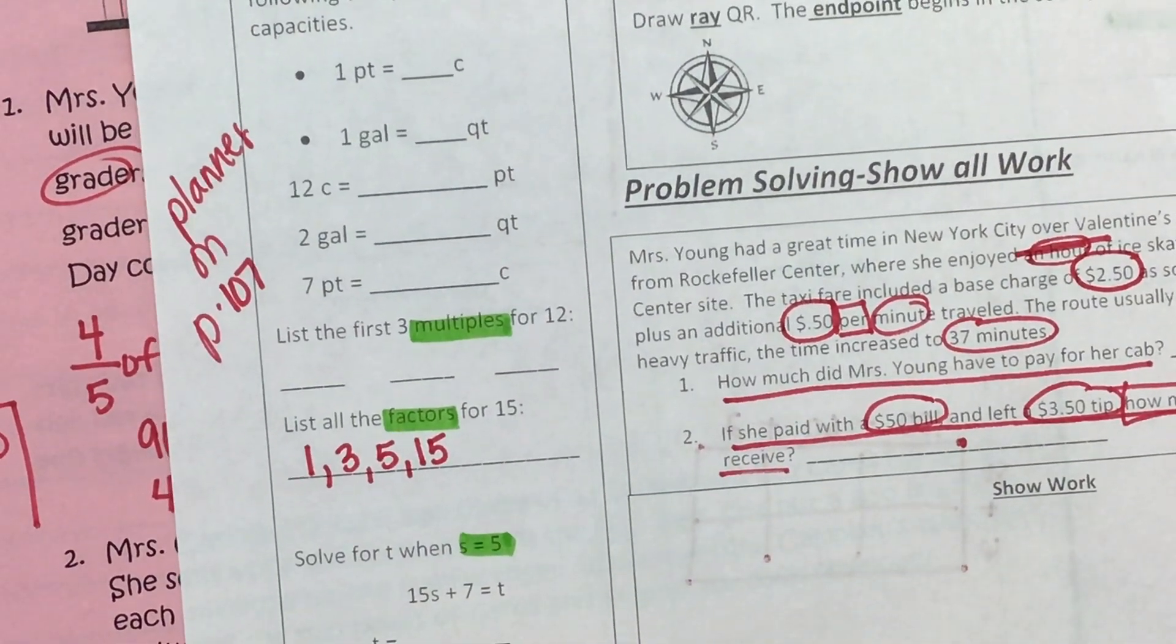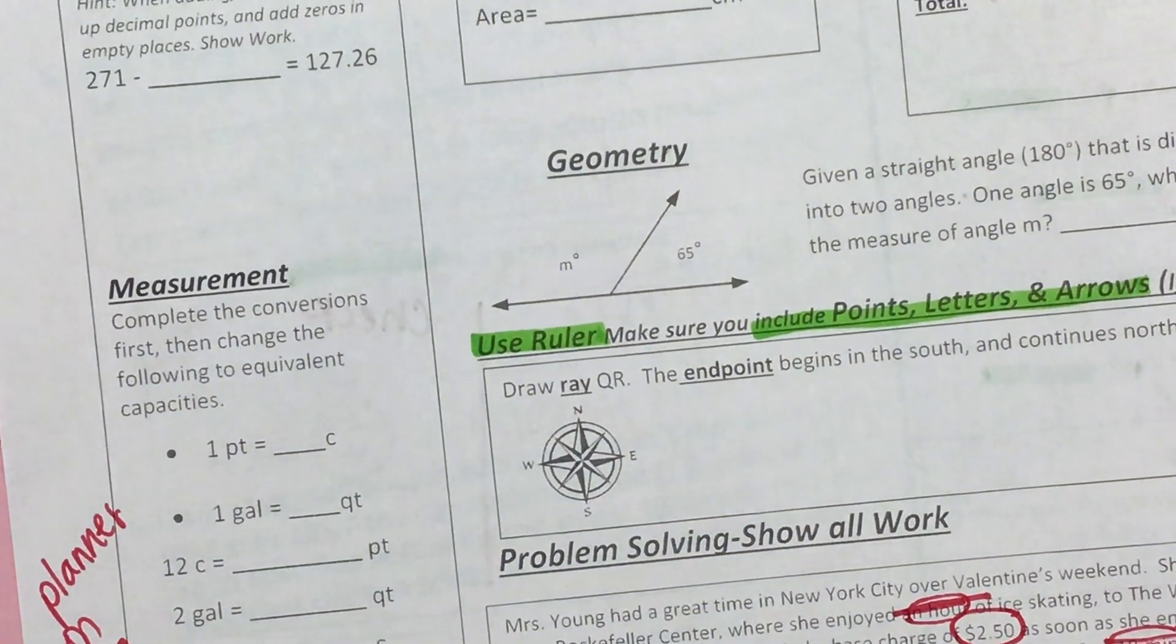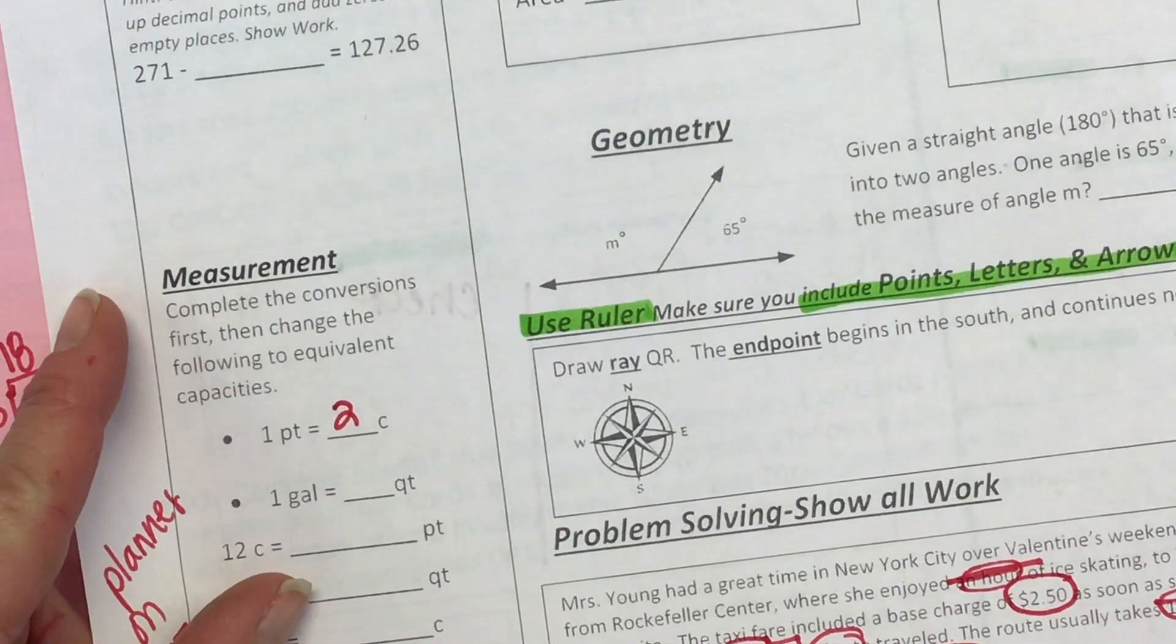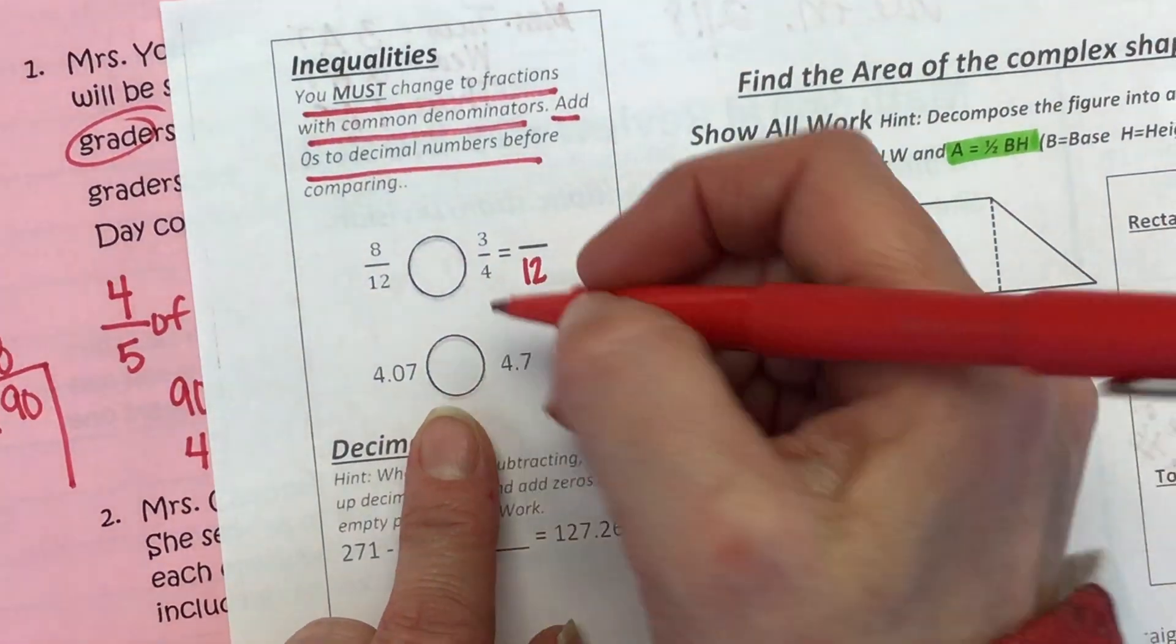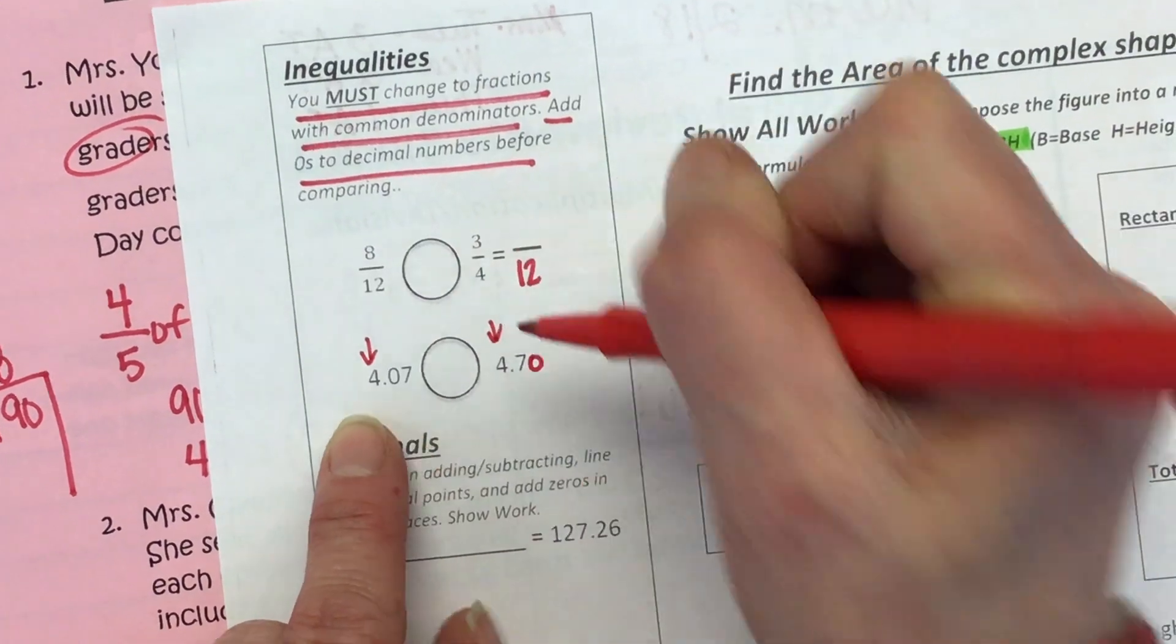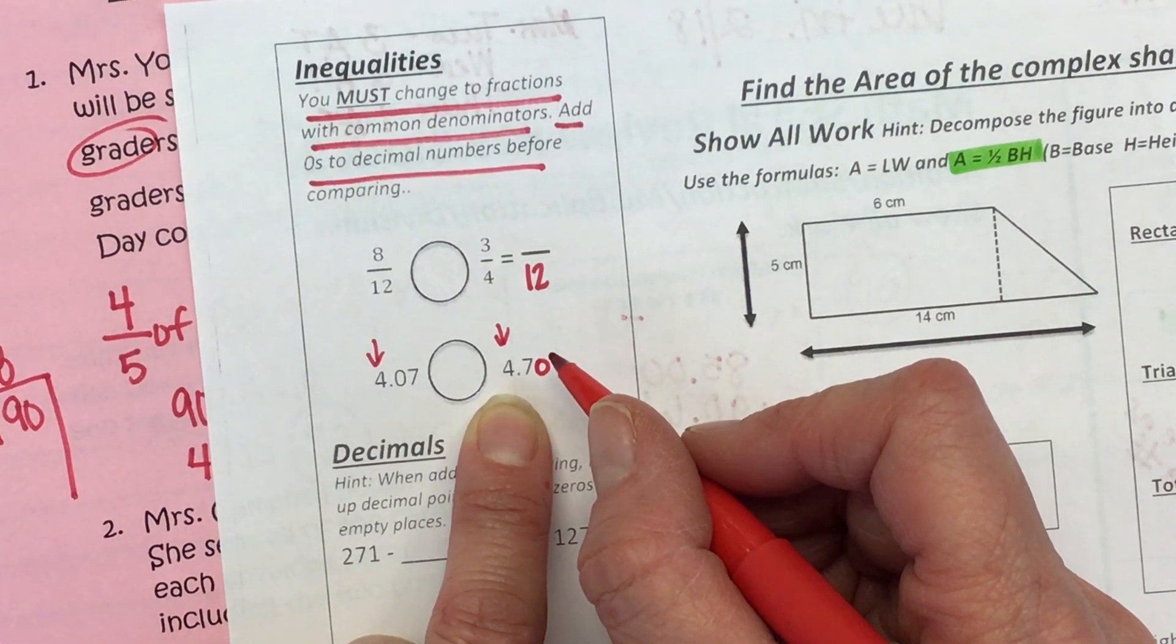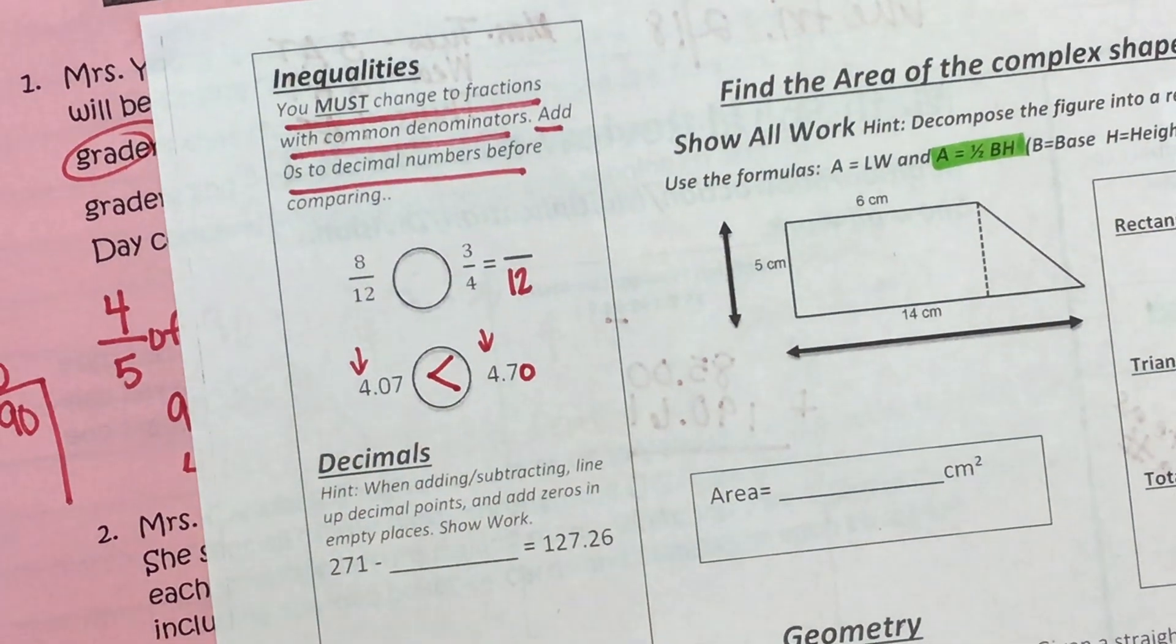The first one on measurement. One pint. If you'll go to the page in the planner that I told you and find one pint equals two cups. Next, the inequality. I said you're losing a point if you don't put that zero there. So go ahead and put that there. You start with your largest place value. They both have a four in the ones place. Then here's a zero in the tenths place and a seven in the tenths place. So which one is bigger? Seven tenths or zero tenths? Seven tenths.